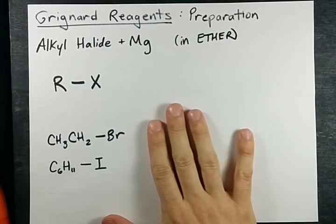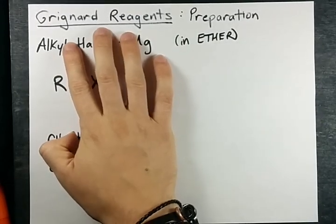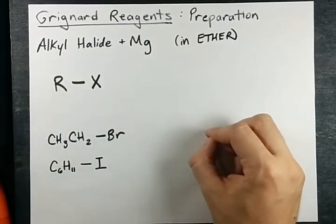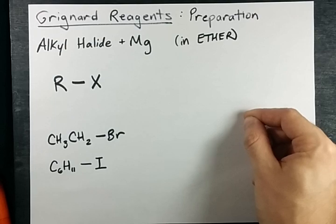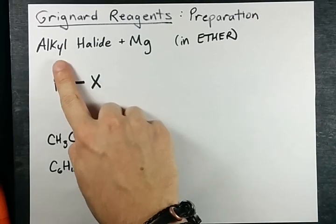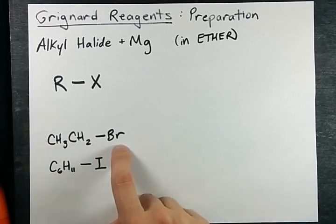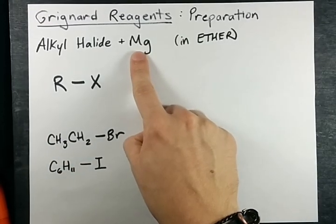This is my first video in a series about Grignard reagents. Grignard reagents are used to attack carbons that have a delta plus charge, and they're made by mixing an alkyl halide - that's some kind of carbon chain with a halogen atom on it - with magnesium.